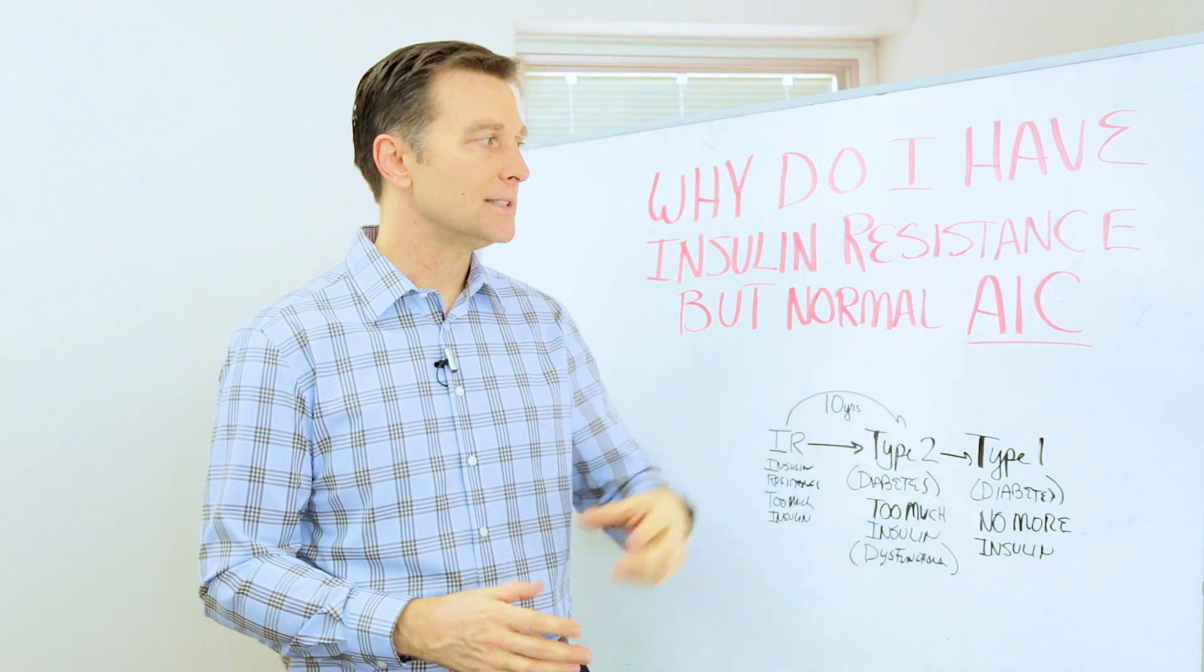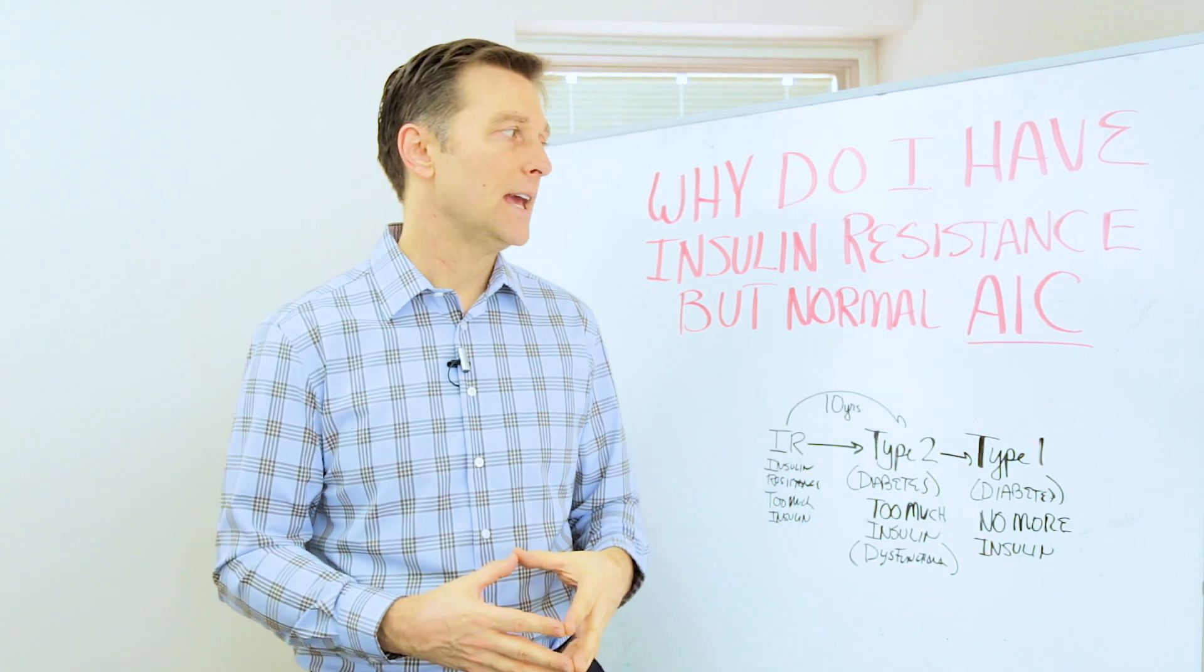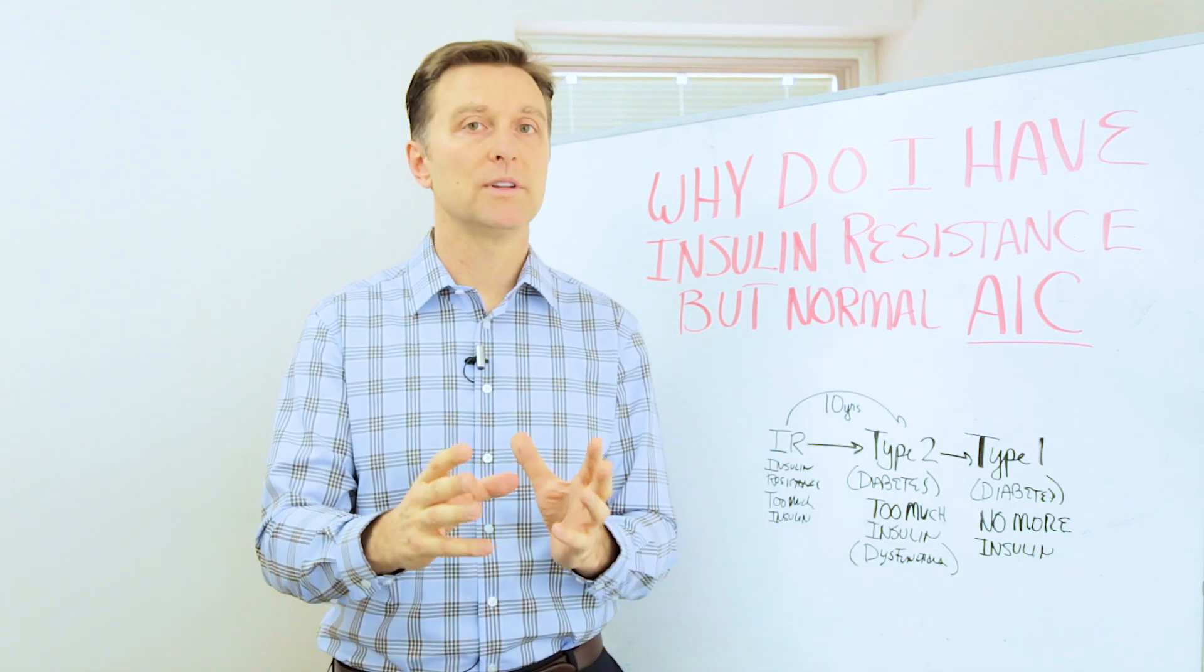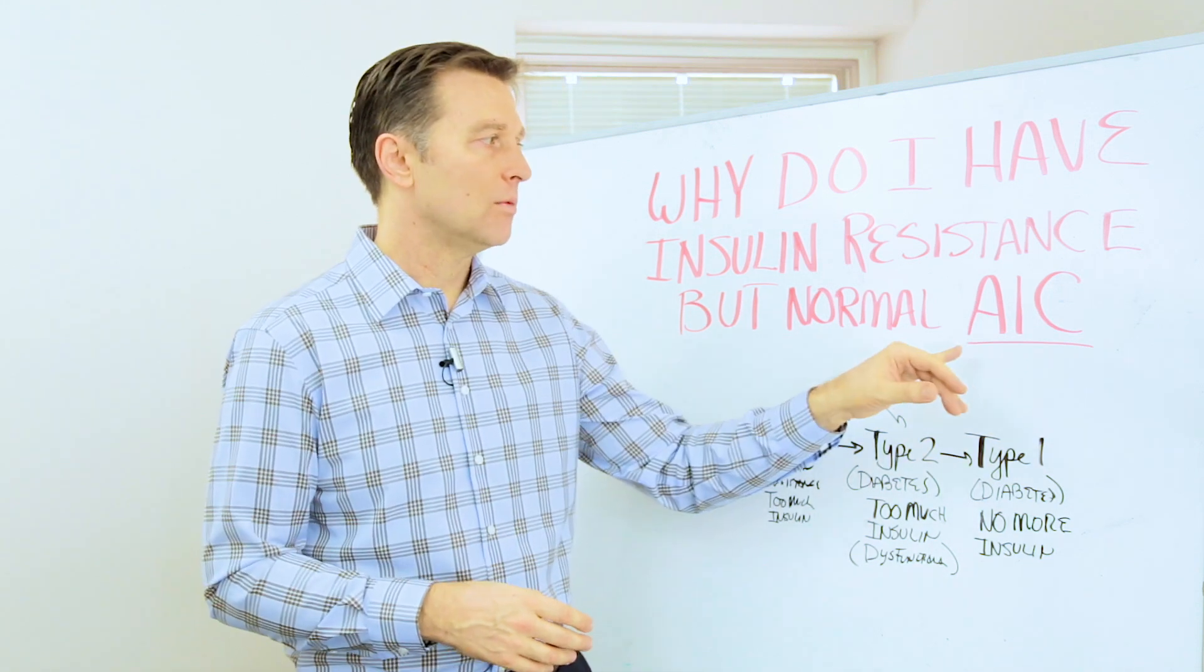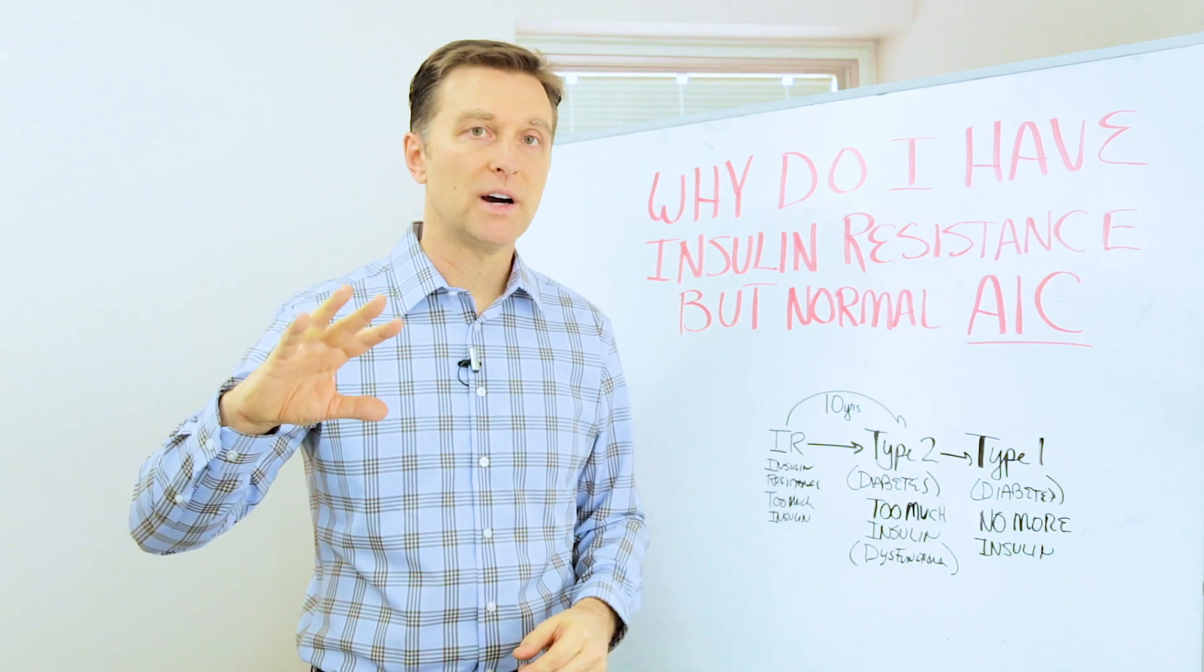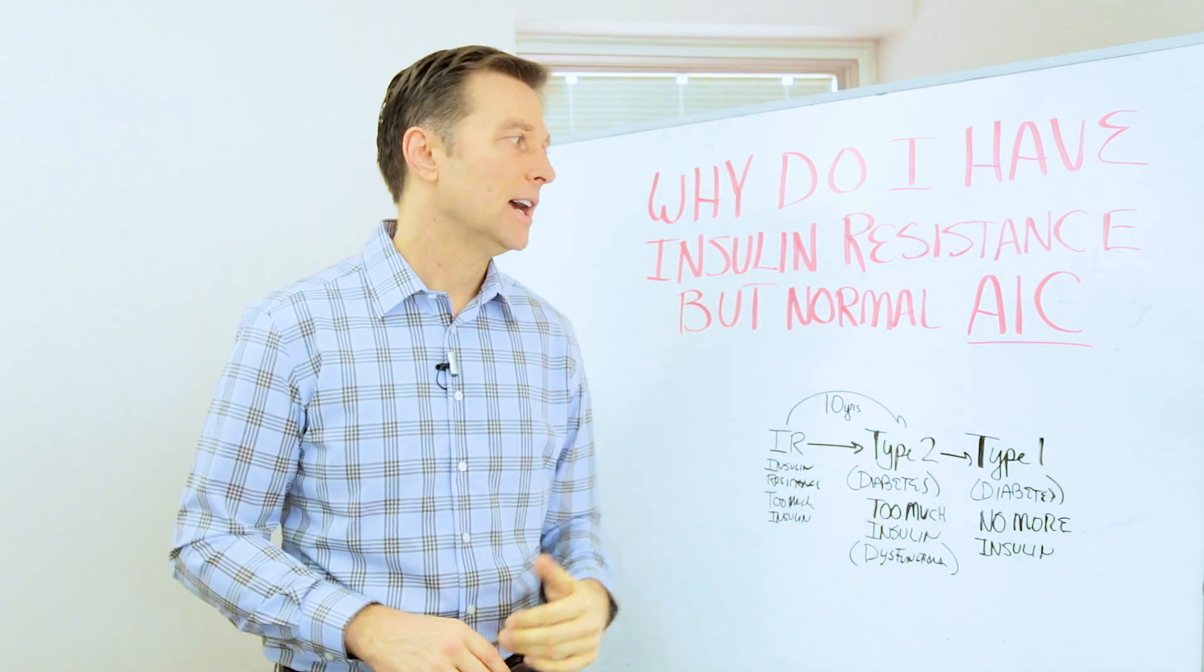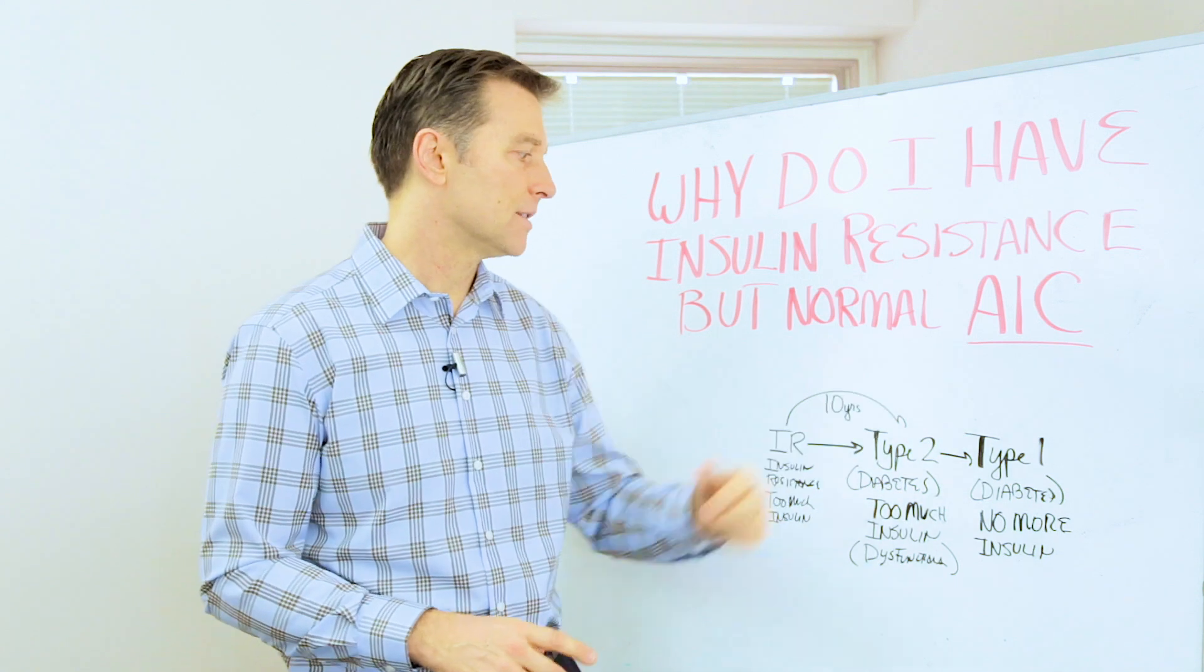And then A1c is a test to diagnose diabetes. A1c tests an average of three months of your blood sugar, so it's more reliable than just one blood sugar test. A1c should be like high fours, fives, low fives. But when it gets into higher fives, six, seven, eight, nine, 10, 11, then you have serious blood sugar, you're already a diabetic. So that's how they diagnose it.